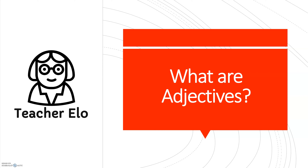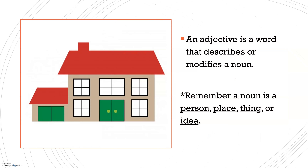Hey guys, this is Teacher Elo and I'm here to explain adjectives. So what are adjectives? An adjective is a word that describes or modifies a noun, and it's very important to understand what a noun is. A noun is a person, place, thing, or idea.